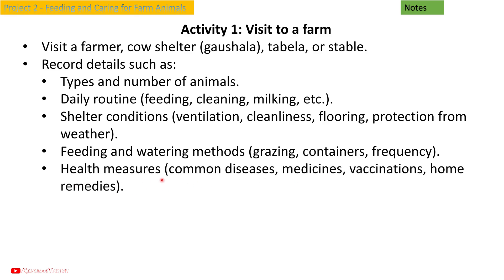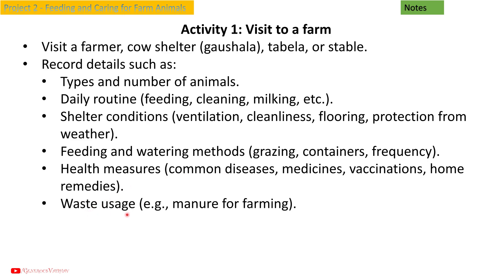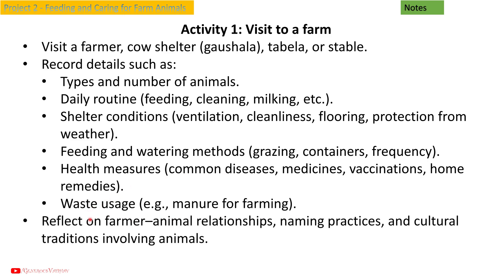Also record health measures such as common diseases, medicines, vaccinations, and home remedies, as well as waste usage — for example, manure for farming. Reflect on farmer-animal relationships, naming practices, and cultural traditions involving animals.